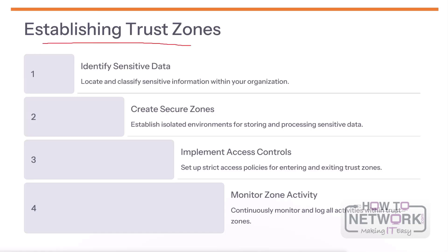By establishing trust zones, sensitive data is properly identified and classified. Secure, isolated zones are created to store and process sensitive information, dramatically reducing the risk of breaches or leaks. Strict access controls ensure only authorized personnel can enter and exit these trust zones. Continuous monitoring and logging of all activities within the trust zones allows quick detection and response to any suspicious behavior.